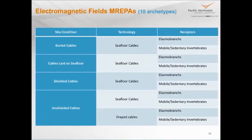For EMF, the site conditions we thought about were buried cables or cables laid on the sea floor, and shielded or unshielded cables. In terms of specific technologies, they're mostly sea-floor cables, although you might have draped cables — for example, if you had floating wave or wind devices, you would have inter-array cables going through the water column, which are pretty much always unshielded because they can't take the weight of the shielding. The same is true for a cable going from the device down to the sea floor. In terms of receptors, we have various elasmobranch species and a series of invertebrates. If you play that out, it's ten archetypes.